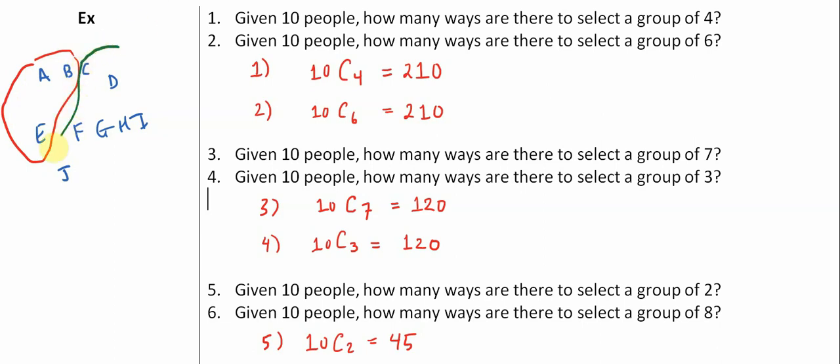So the number of possible ways for me to choose seven people is exactly the number of ways for me to choose three people if I'm starting out with ten.